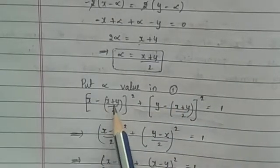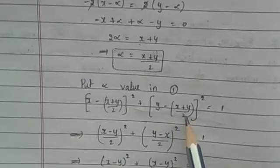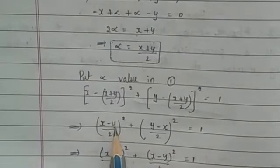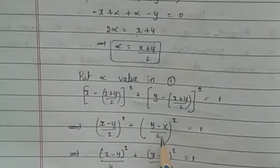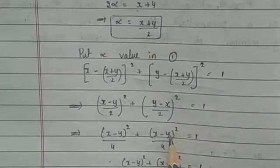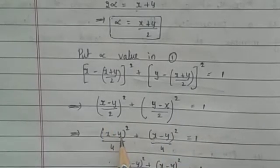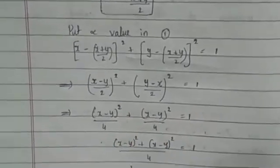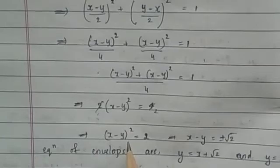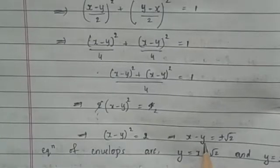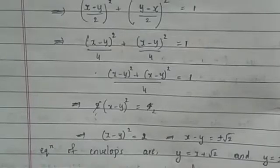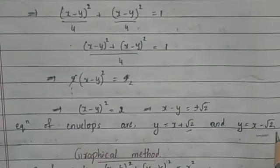Substituting α = (x + y)/2 into the given equation gives [x − (x+y)/2]² + [y − (x+y)/2]² = 1. Simplifying, we get [(x−y)/2]² + [(y−x)/2]² = 1, which gives 2(x−y)²/4 = 1, so (x−y)² = 2. Therefore x − y = ±√2, and the equations of the envelopes are y = x + √2 and y = x − √2.